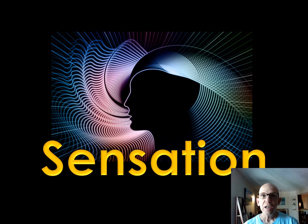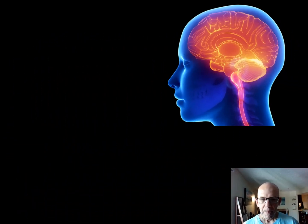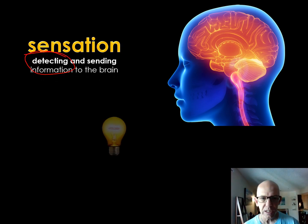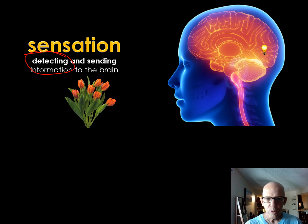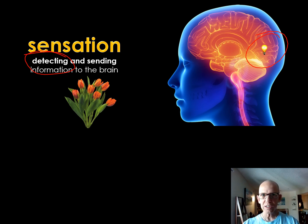Today's lecture is on sensation and the next lecture is on perception. They kind of go together, but I broke them apart. This is the beginning of the stuff for exam two. Sensation is about detecting — a light, a smell, a sound — and then sending it to the brain. With light, it goes to the back part of the brain, the occipital lobe. Sensation is always an afferent process because we're detecting information with our eyes, ears, and other senses, then sending it to the brain.